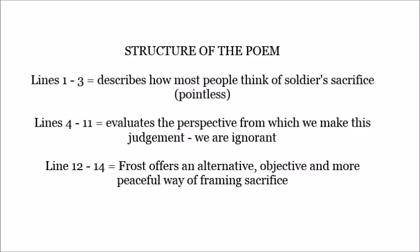I think this poem is split into three sections. Lines one to three outline how most people see soldiers' lives — merely as a dead body which has fallen for no reason. Lines four to eleven start to rethink this as Frost evaluates this perspective and how it might be biased or misunderstood. Then lines twelve to fourteen offer an alternative, more peaceful and objective conclusion. Now let's look at it line by line.